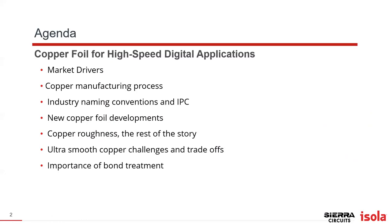The agenda today covers market drivers — why we need new types of copper foil — copper manufacturing process basics, industry naming conventions, some of the issues IPC is addressing with new copper foils, new copper foil developments, and where the market is going. We'll also cover copper roughness — the rest of the story. One issue in the industry is people ask for the RZ of the material and assume that's adequate for modeling. There are also ultra-smooth copper challenges: when you have a smooth foil, you still need to bond it to your dielectric and resin, so we'll talk about the importance of bond treatment.